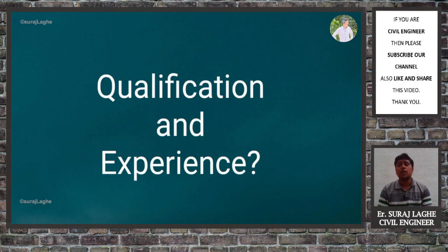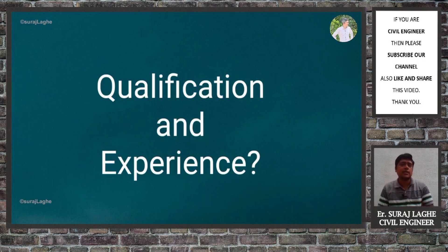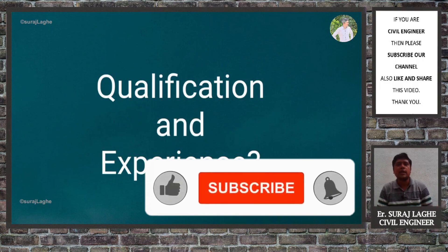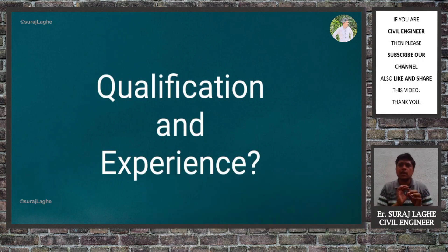An important point is qualification and experience, which may vary by state. The basic minimum qualification is a diploma in civil engineering, which allows you to apply for the basic registration license. Regarding experience — in Maharashtra, for example, a diploma holder needs a minimum of 10 years of experience for a registered civil engineer license. However, if you don't have 10 years of experience but hold a diploma, you can still apply and receive a supervisor-level license.